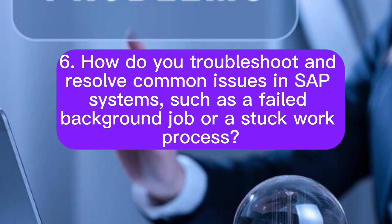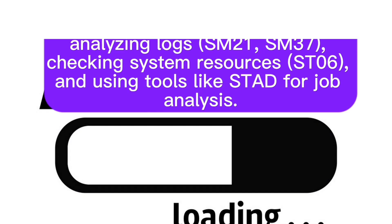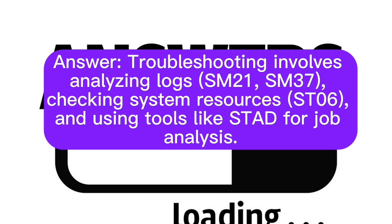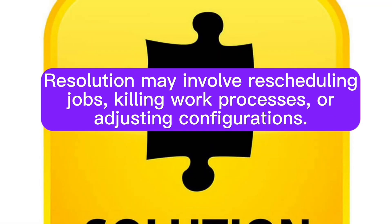Question 6: How do you troubleshoot and resolve common issues in SAP systems, such as a failed background job or a stuck work process? Troubleshooting involves analyzing logs (SM21, SM37), checking system resources (ST06), and using tools like STAD for job analysis. Resolution may involve rescheduling jobs, killing work processes, or adjusting configurations.